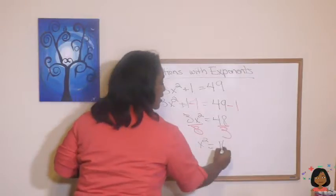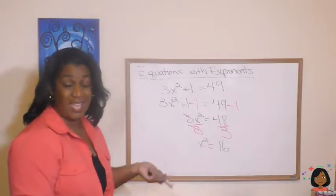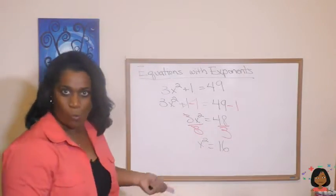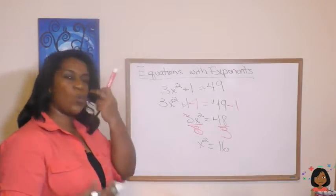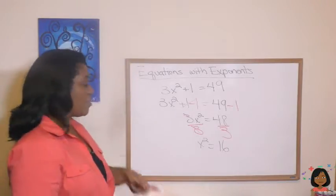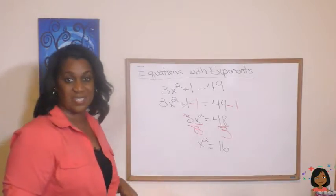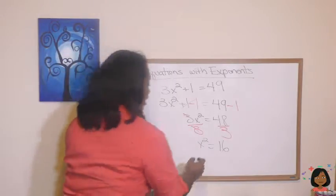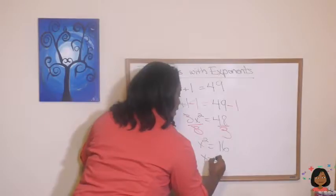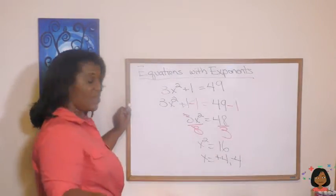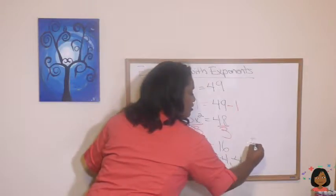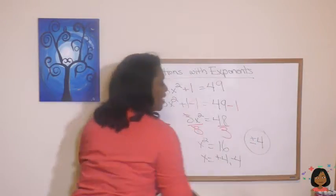3 goes into 18 six times. x squared equals 16. One more step, we've got to get this down to just the x. So what times what, or what are the square roots of 16? We have a positive 4 and we have a negative 4, or again another way to write it is plus or minus 4. That's your answer.